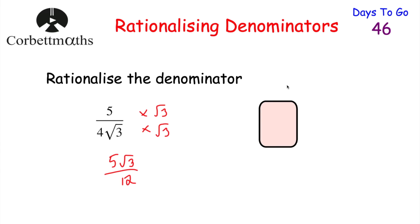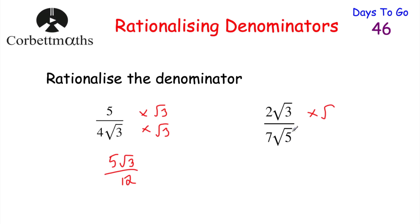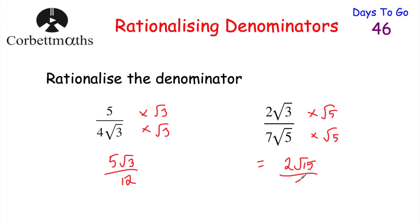Here's one for you to try: can you rationalize the denominator of 2√3 over 7√5? To rationalize, multiply both the numerator and the denominator by root 5. On the numerator, 2√3 times root 5 gives 2√15. On the denominator, 7 multiplied by root 5 times root 5 gives 7 times 5, which is 35. So the answer is 2√15 over 35, and we've rationalized the denominator.